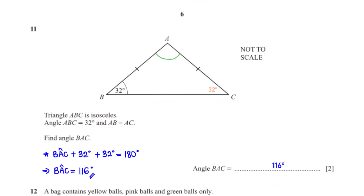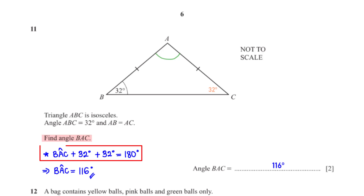Triangle ABC is isosceles, angle ABC is 32 degrees, and AB equals AC. Find angle BAC. Base angles in an isosceles triangle are equal, and the angles in the triangle must add up to 180 degrees. So angle BAC + 32 + 32 = 180. Making angle BAC the subject gives 116 degrees.